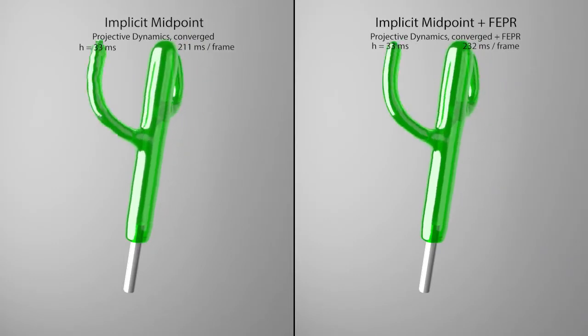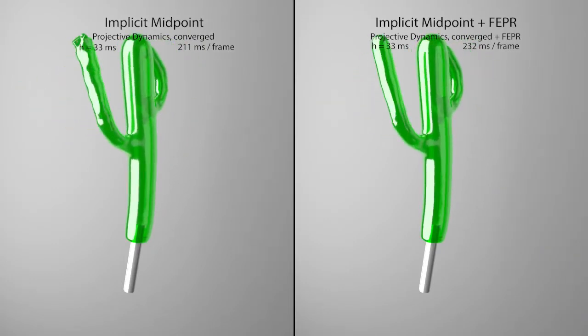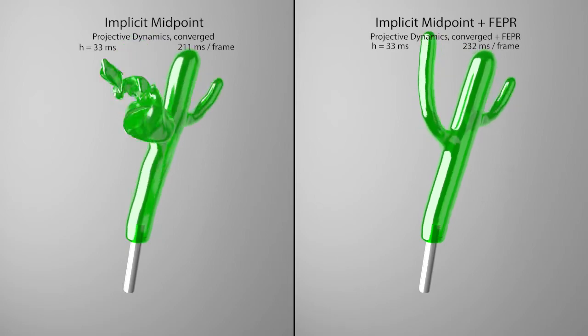Implicit midpoint can explode at large time steps. Our projection stabilizes the result and keeps the vivid motion.